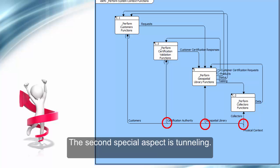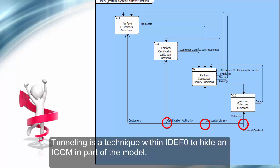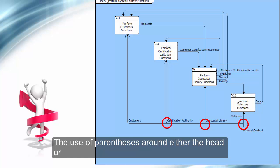The second special aspect is tunneling. Tunneling is a technique within IDEF0 to hide an ICOM in part of the model. The use of parentheses around either the head or tail of an arrow depicts a tunnel in IDEF0.